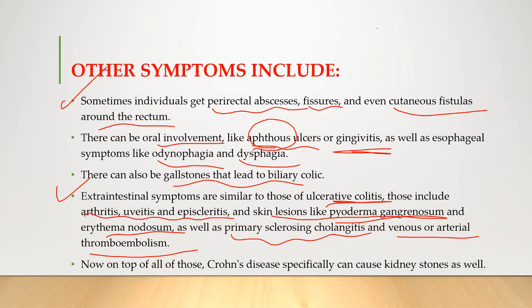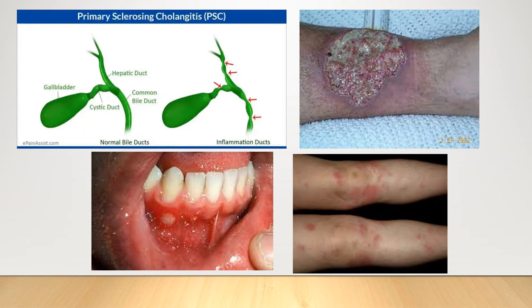Crohn's disease can also specifically cause kidney stones. This is due to malfunctioning of the small intestine leading to reduced absorption of calcium ions. Calcium absorption in Crohn's disease is affected mainly due to malabsorption of vitamin D, which being a fat-soluble vitamin is not absorbed properly, leading to calcium malabsorption and kidney stone formation.